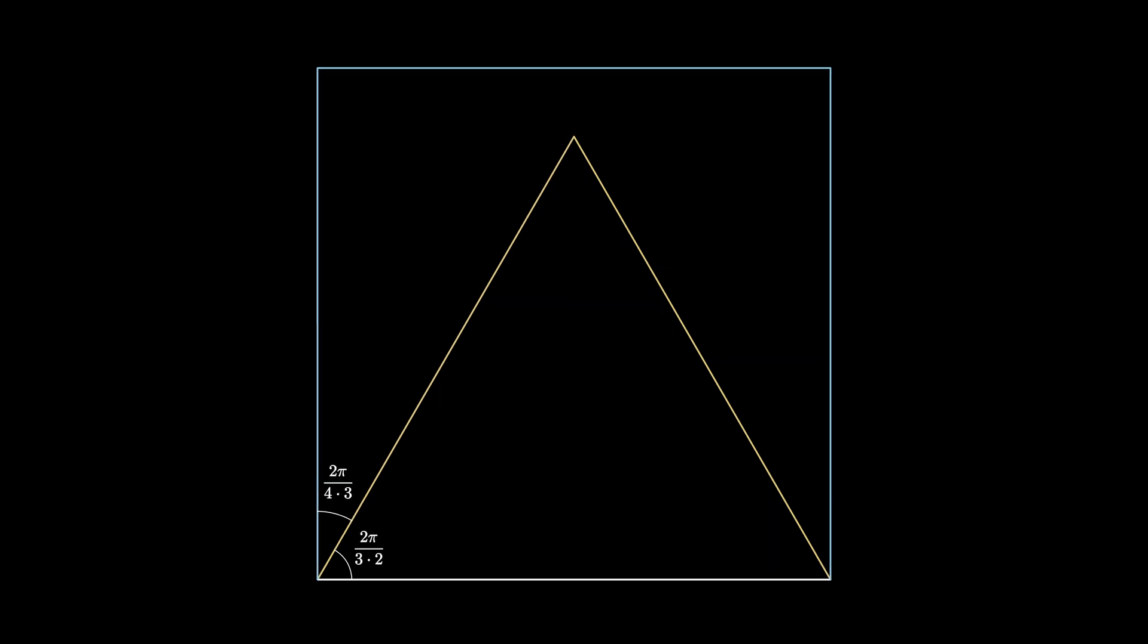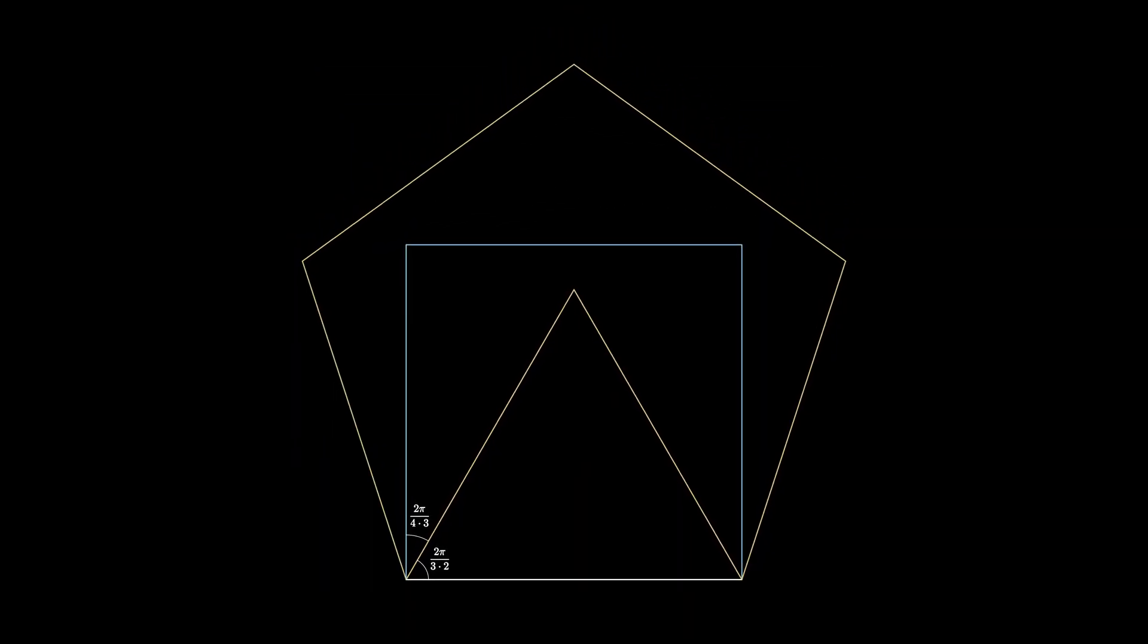Let's extend this again by drawing a pentagon with side length equal to the square length. Again, the interior angle of the pentagon is 3π over 5, so the difference in angle between the pentagon and the square is 3π divided by 5 minus 2π over 4, and this simplifies to 2π divided by 5 times 4.